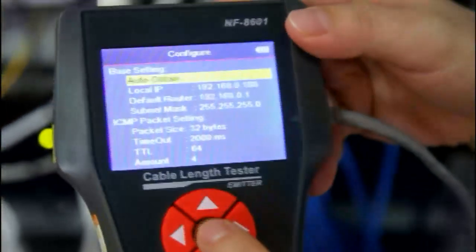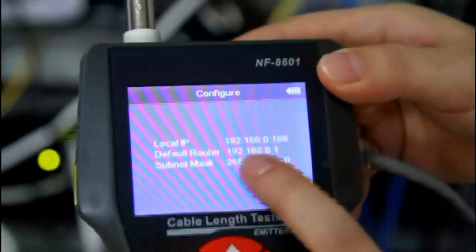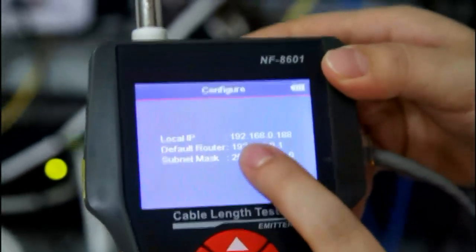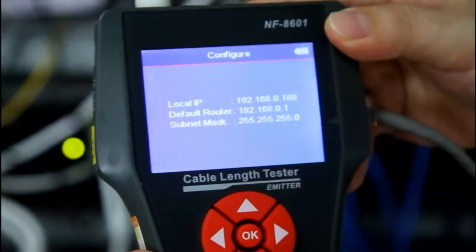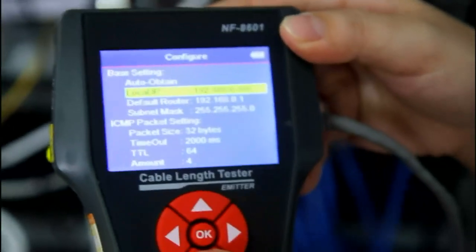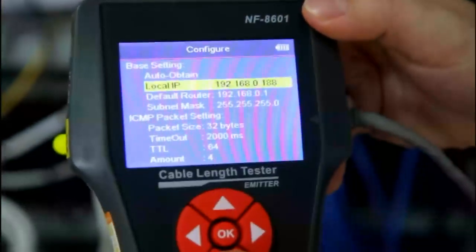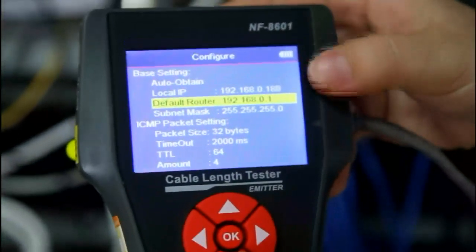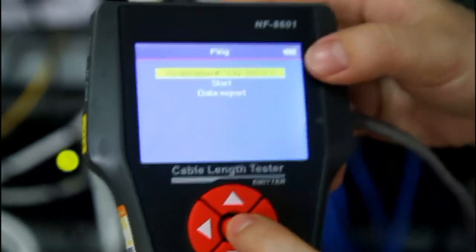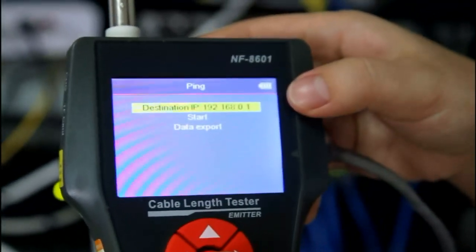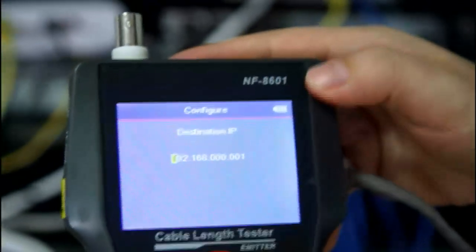Let's auto-obtain the local IP. Since the first three parts of local IP and default router should be the same, let's check. The local IP is 192.168.0. The default router is the same as local IP. Here we have to adjust the destination IP to be the same as local IP.